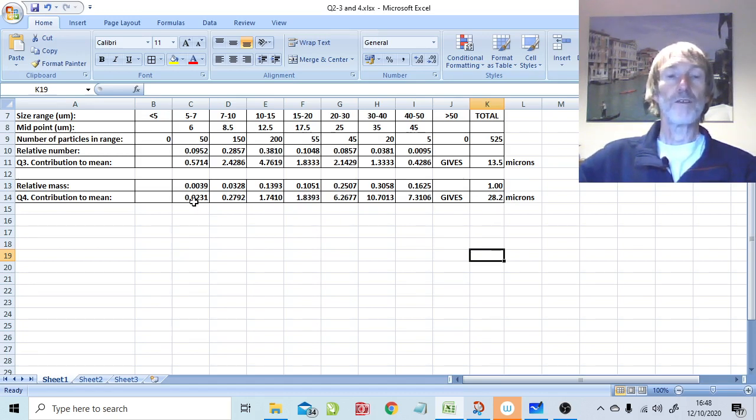And you'll notice that the contribution to the mean from the smaller sizes is negligible. The biggest contribution to the mean, 7.3, 10, comes from the bigger sizes. There's only five particles in the bigger size, so that gives a relatively small contribution to the mean when looking at the mean by number. But it gives a very substantial contribution to the mean when looking at the mean by mass, because bigger particles have big volume and therefore big mass.